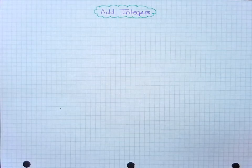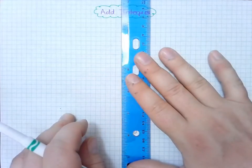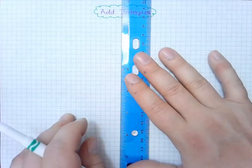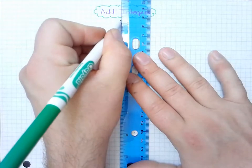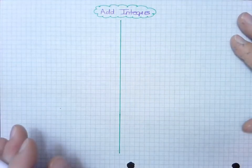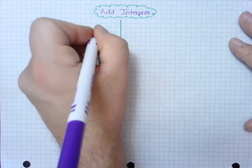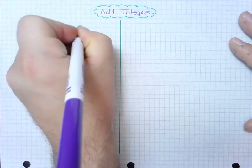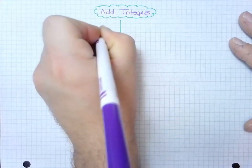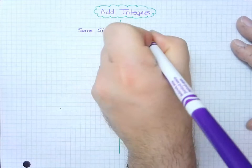Add integers. So I'd like to actually create a compare and contrast of two different situations in which we will experience adding integers. In some cases we will have integers with the same signs and then we'll have situations in which they are different signs.